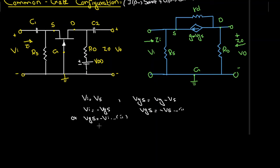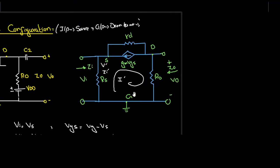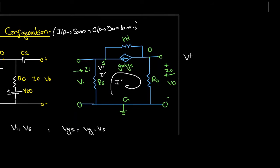The relationship between VGS and VI is: VI equals minus VGS. To find the input impedance, we assume a resistance with current I' flowing, and apply KVL. We also assume a voltage V' which equals VS, which equals VI.